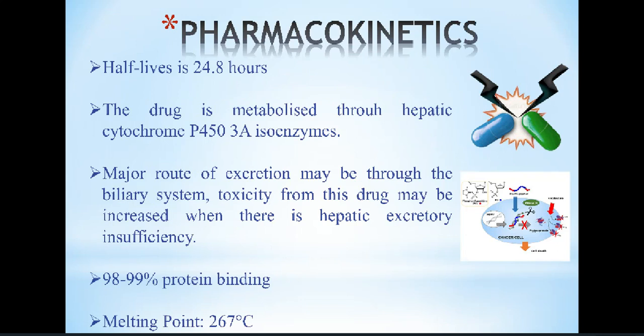Pharmacokinetic properties of vinblastine are: its half-life is 20 to 0.8 hours. Its major route of excretion may be through the biliary system. Toxicity from this drug may be increased when there is hepatic excretory insufficiency. The drug is metabolized through hepatic cytochrome P450 isoenzymes. Its protein binding is about 98–99% and melting point is 267 degrees centigrade.